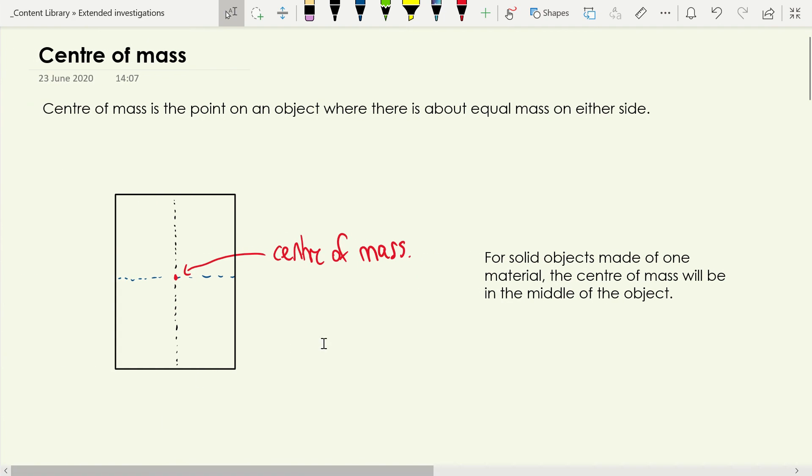For an object that is solid and made of one material, and we've got a nice regular shape like this, the center of mass is pretty much bang in the middle of the object. If you were trying to find your center of mass as a human, it's about in your stomach kind of region. So it's about the middle of an object, so there's roughly equal mass on either side. You can see here where this one is, there's about the same mass below and above, and there's about the same mass left and right.